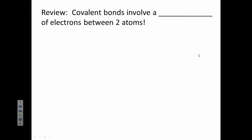Covalent bonds involve a sharing of electrons between two atoms. That's different from ionic bonds, for example. And also remember that covalent bonds are between non-metals.